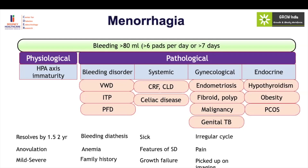Endocrine causes of menorrhagia also exist and usually have features of the endocrine disease — typically obesity and features of hyperandrogenism. Especially in PCOS, many girls present with menorrhagia as their clinical presentation.